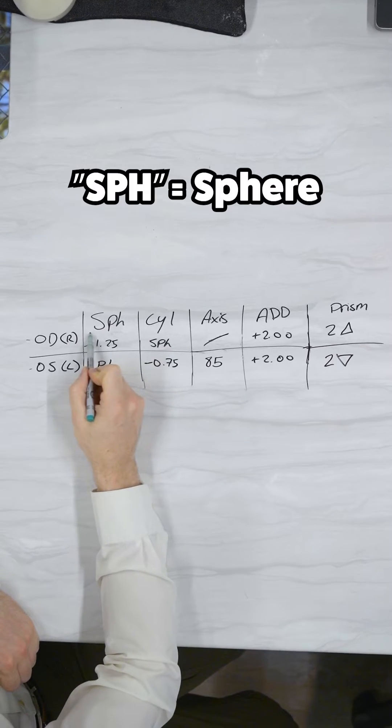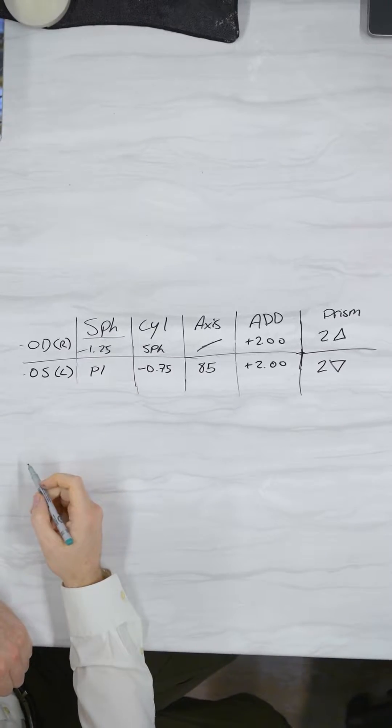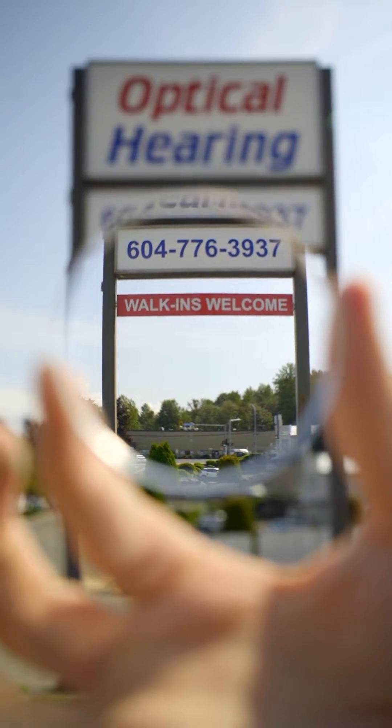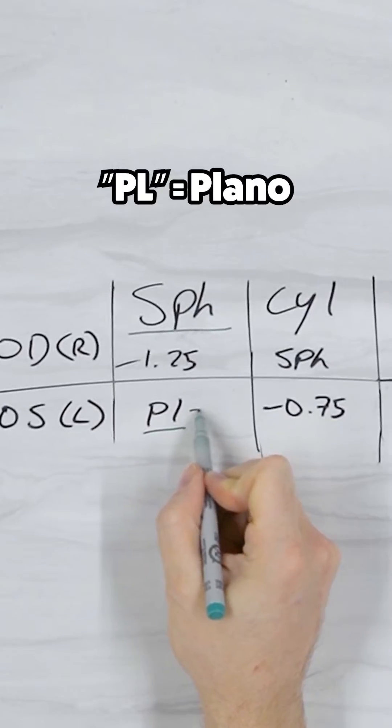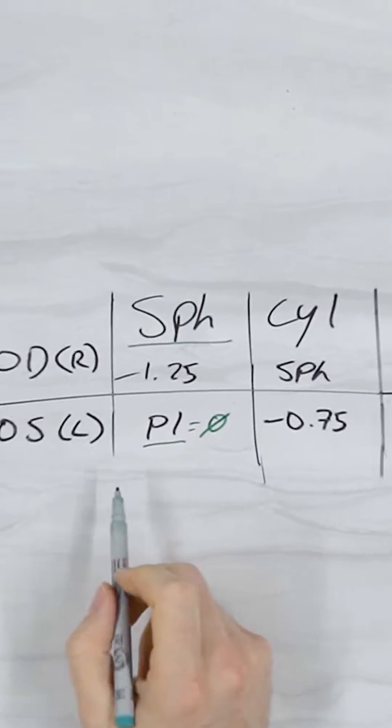SPH stands for sphere. It's the depth control portion of your prescription and this is what a depth control lens does. PL or plano means that there is no depth control component to the lens.